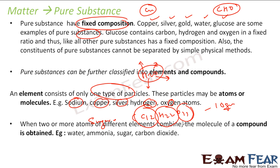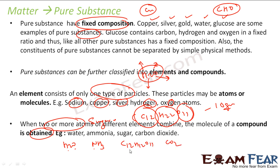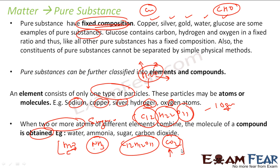In case of compounds, more than two atoms are combined to form a compound. For example, ammonia NH3 — here nitrogen and hydrogen atoms are combined to form ammonia. Water H2O — hydrogen and oxygen are combined to form water. Sugar C12H22O11, carbon dioxide CO2 — carbon and oxygen molecules are combined. Compounds are formed when you combine two or more different elements. In both cases, the composition is fixed — water molecule is always 2 moles of hydrogen and 1 mole of oxygen. Any carbon dioxide will have the same composition of carbon and oxygen, percentage-wise.